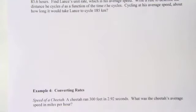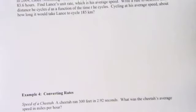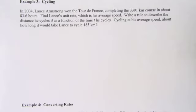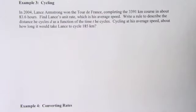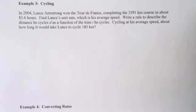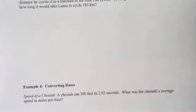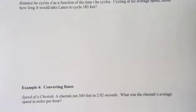So the next thing we want to look at is example three. So this is on the other side. We have that Lance Armstrong won the Tour de France, completing the 3,391-kilometer course in about 83.6 hours. I'm going to fix my lighting here a minute.